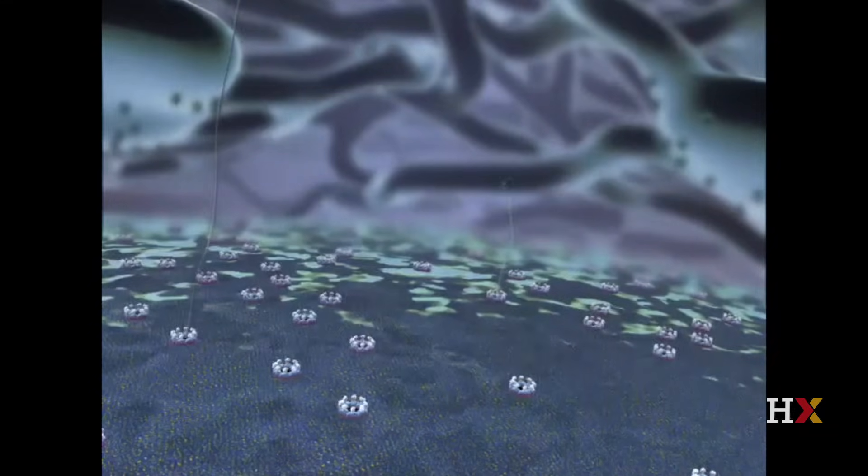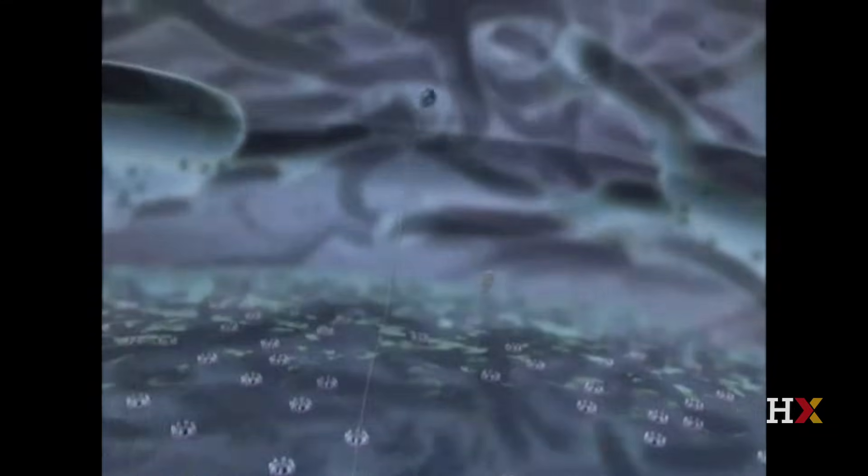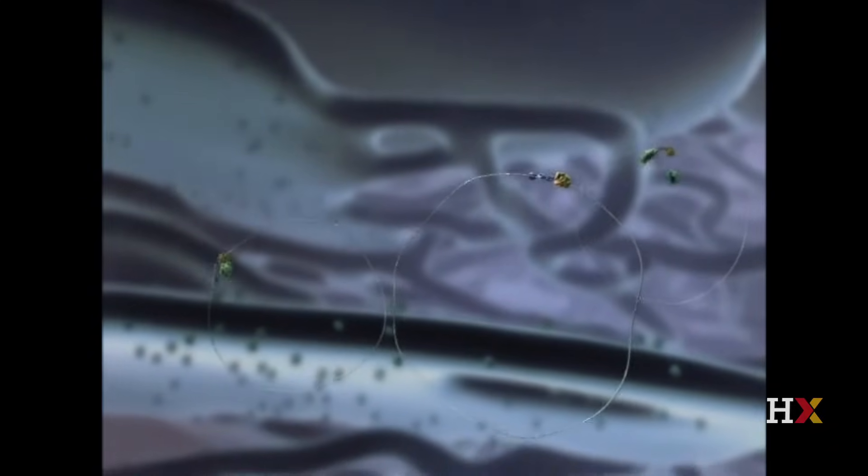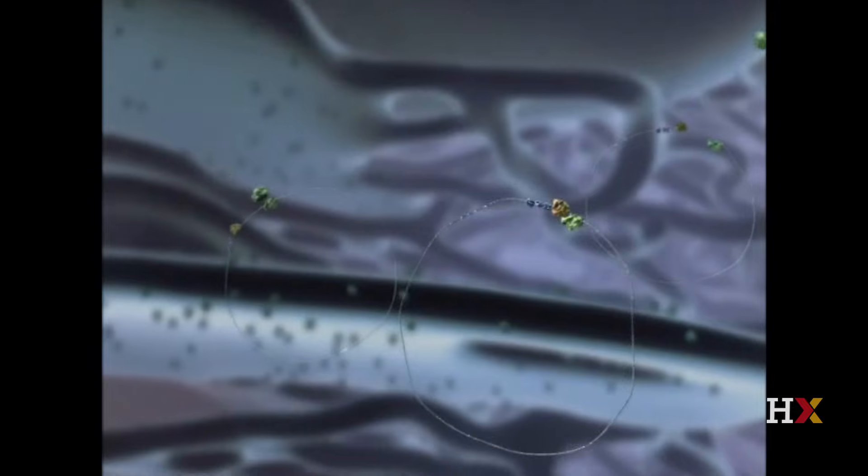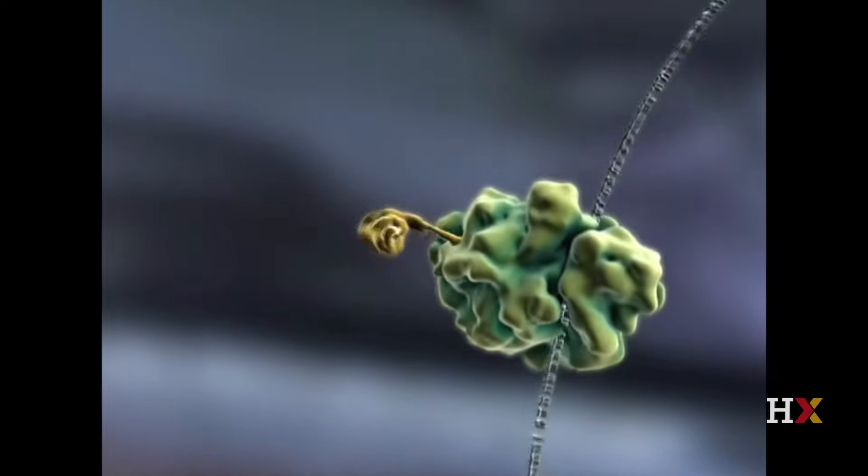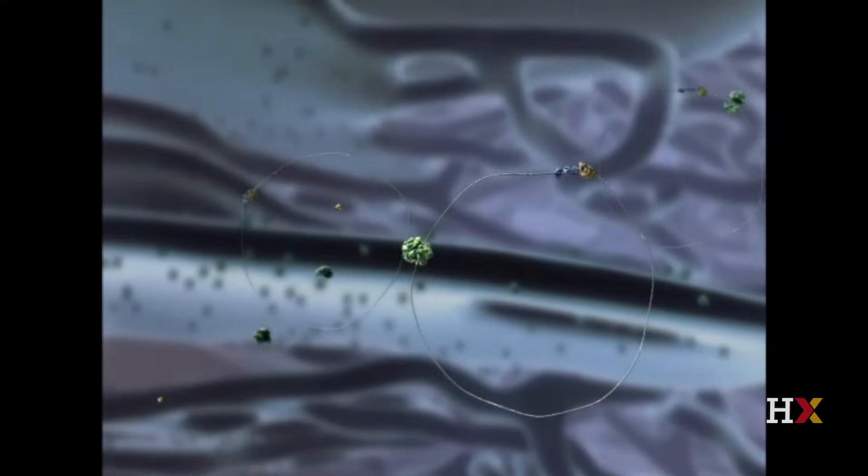Messenger RNAs are transported out of the nucleus and serve as templates for protein translation. So ribosomes assemble on these messenger RNAs, and as those proteins are made, some of them are free to float in the cytoplasm.